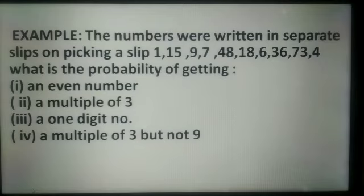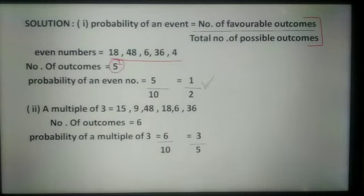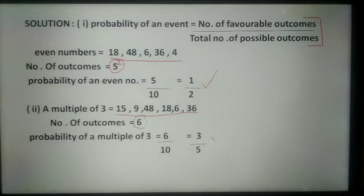In this example, numbers are written on separate slips: 1, 50, 9, 7, 48, 18, 6, 36, 73, 4. On picking a slip, what is the probability of getting an even number, a multiple of 3, a one-digit number, and a multiple of 3 but not 9? For an even number: even numbers are 50, 48, 18, 6, 36, and 4, so number of favourable outcomes is 5. Probability = 5/10 = 1/2. For a multiple of 3: multiples are 9, 48, 18, 6, and 36, so number of outcomes is 5... wait — outcomes are 6, so probability = 6/10 = 3/5.